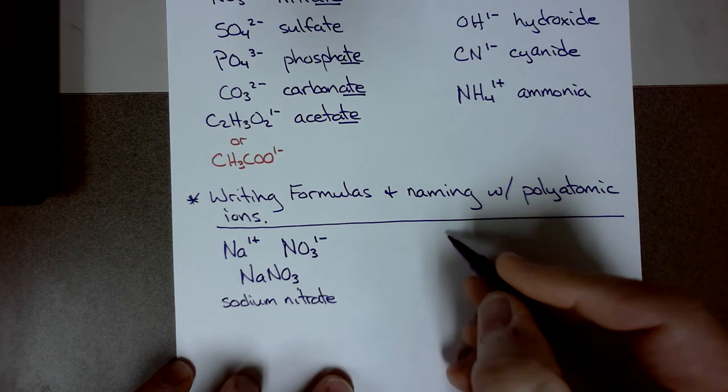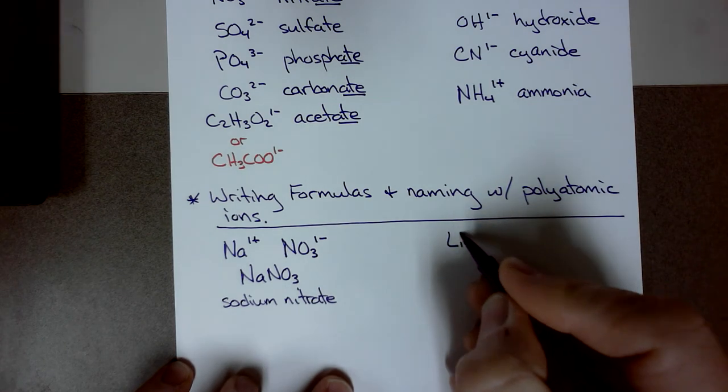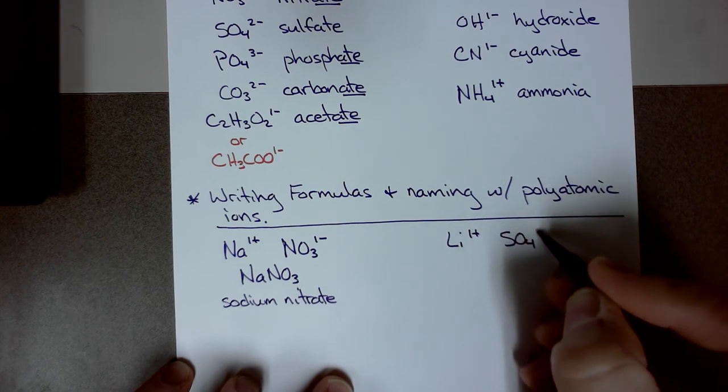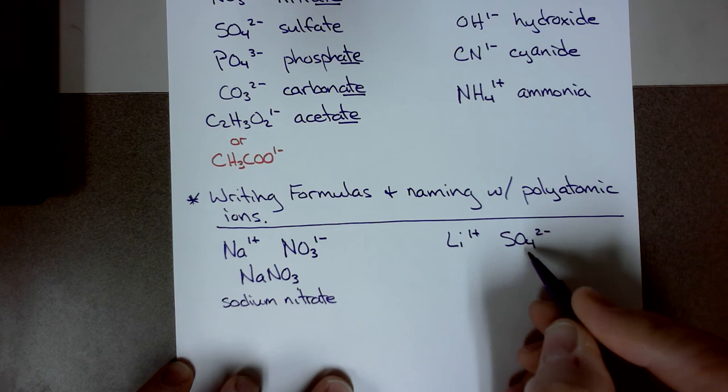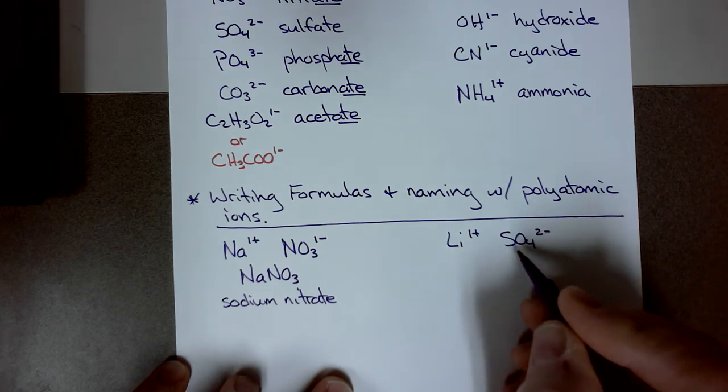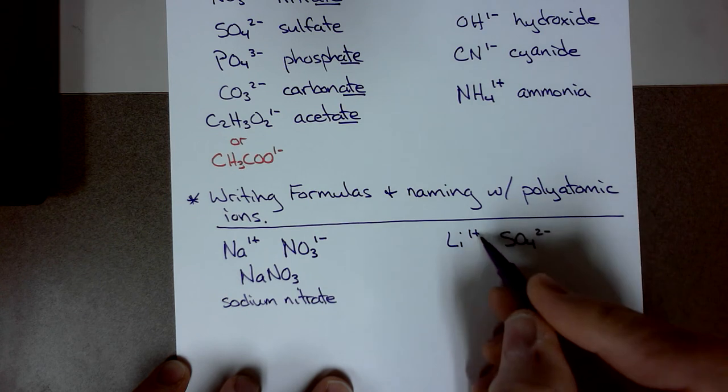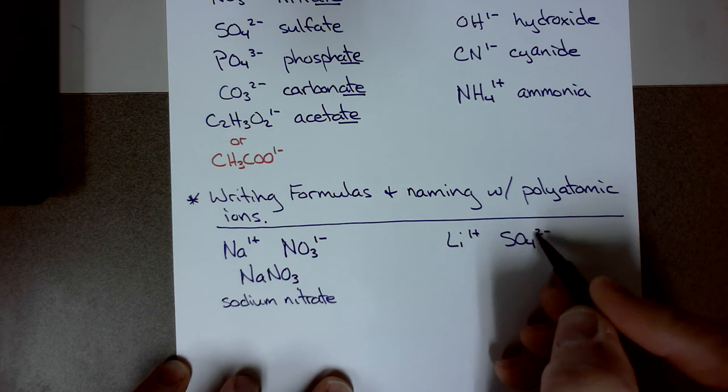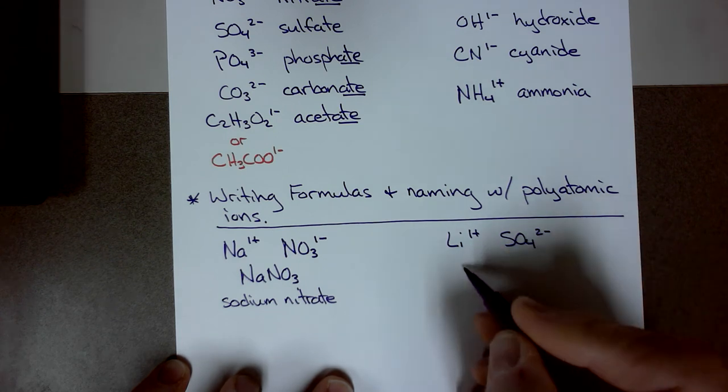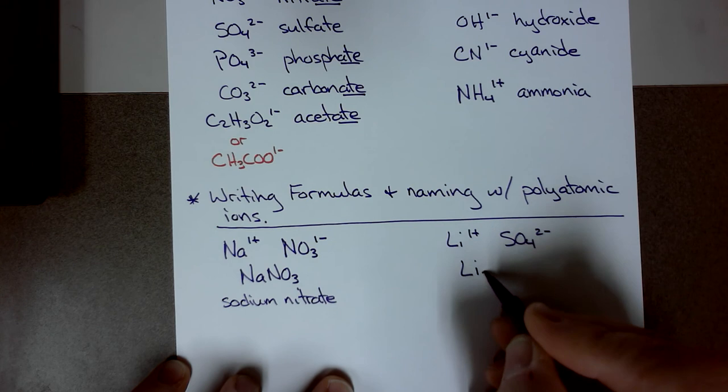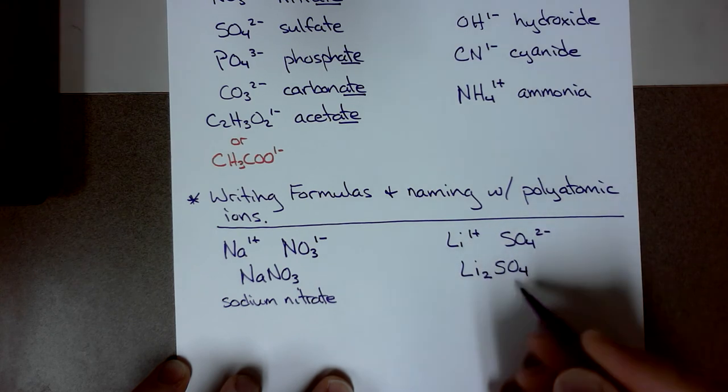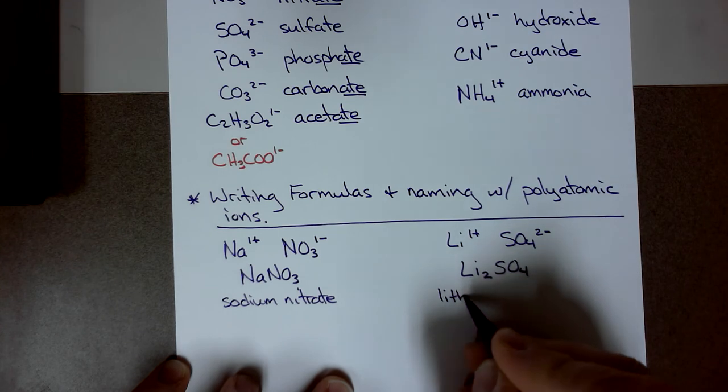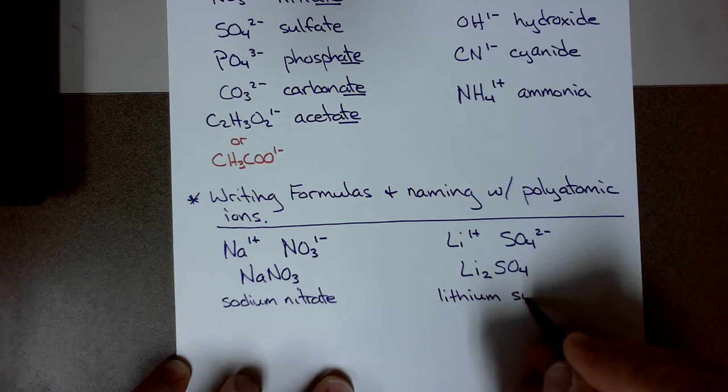Let's look at another one. Let's say I have lithium, which is also a one plus. It's in group one. And then I have sulfate, SO4 2 minus. This is a polyatomic anion. Again, an oxyanion. And if I do the crisscross, this means that I need one sulfate unit and two lithium ions. So I would write Li2SO4. I have two lithiums and one sulfate ion. Again, we would just name it the name of the ions, lithium sulfate.